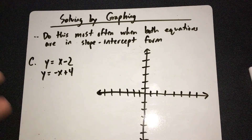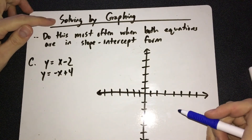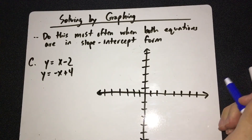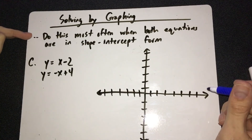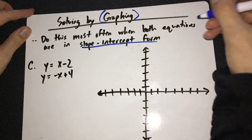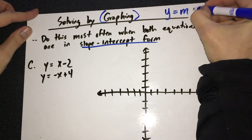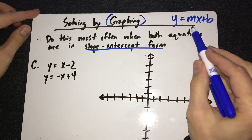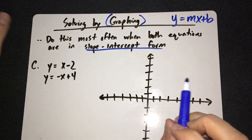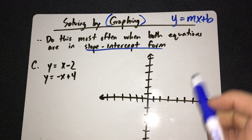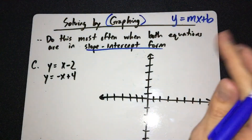Here is the real meat and potatoes — the real concept we need to learn today. How do we solve a system when it doesn't give us the answer? We have to come up with the answer on our own. The strategy you want to use is graphing — you want to graph whenever both equations are in slope-intercept form, where y is isolated on the left side with the slope times x and the y-intercept number at the end. If both equations are written in that format, it's amazing to graph it.